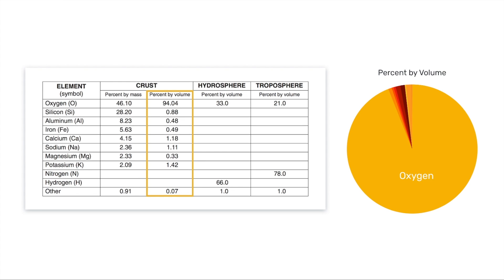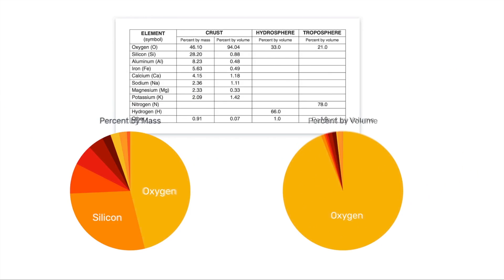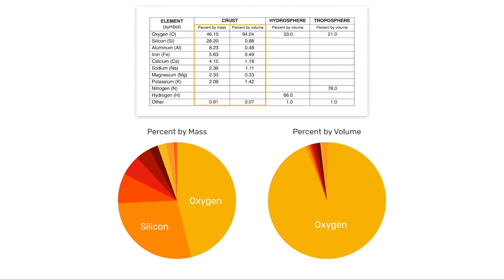If we look at these two pie charts side by side, we see distinct differences depending on whether we're looking at the crust based on the mass of the elements making it up or the volume. So you need to be very careful when dealing with questions on this — notice whether they're asking about mass or volume.